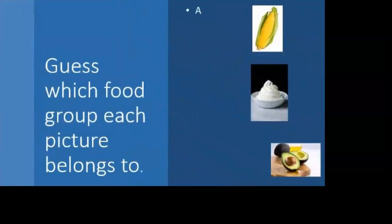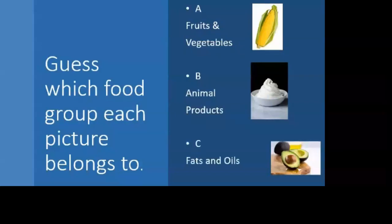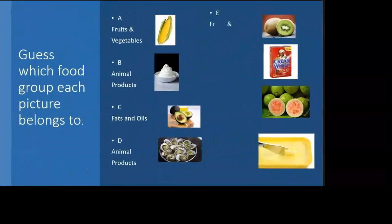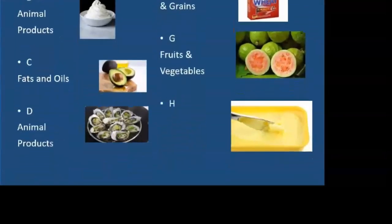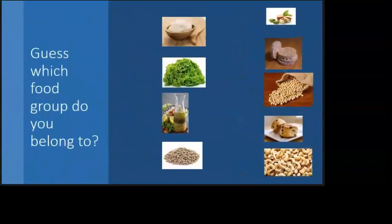The first one, A, is fruits and vegetables — that's the food group it's classified in. B is animal products. C is fats and oils. D is animal products. E is fruits and vegetables. F is cereals and grains. G is fruits and vegetables. And H is fats and oils.